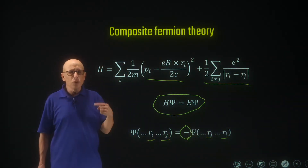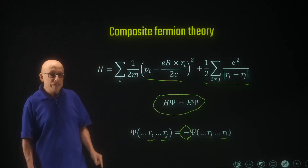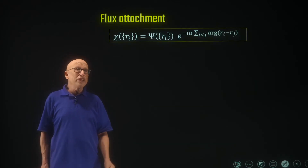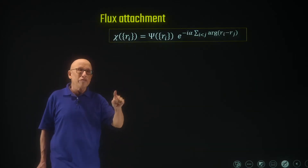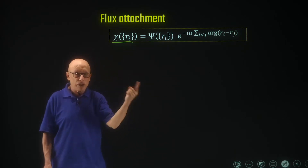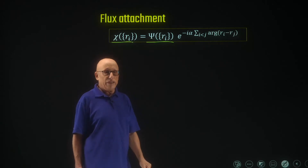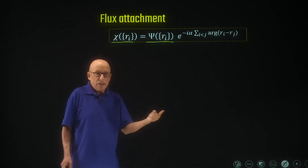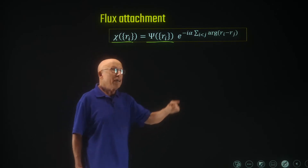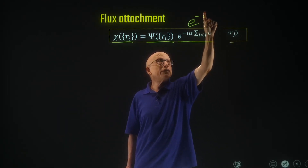We don't know how to exactly solve it, so we need to find an approximation scheme. Our approximation scheme starts from a transformation — a definition of a new wave function chi, which is a function of the same electronic coordinates and is related to the psi wave function by a phase factor, which I can write as e to the minus i lambda.